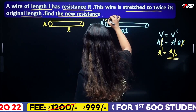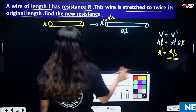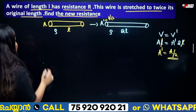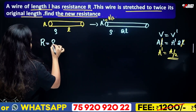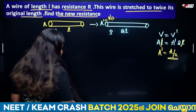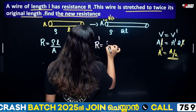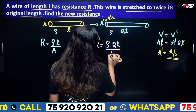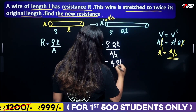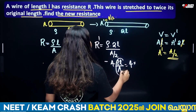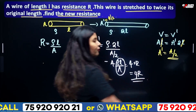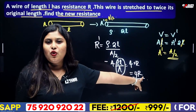The area of cross-section becomes A/2. Since the material is the same, resistivity is ρ. The first equation is R = ρL/A. For the new wire: length is 2L and area is A/2, so R_new = ρ(2L)/(A/2) = 4ρL/A = 4R. The new resistance is 4 times greater.